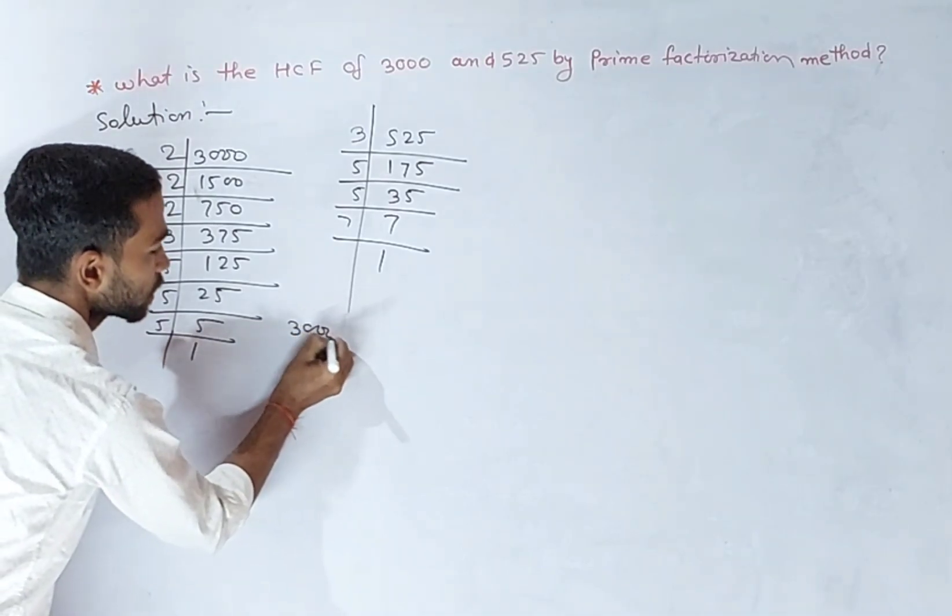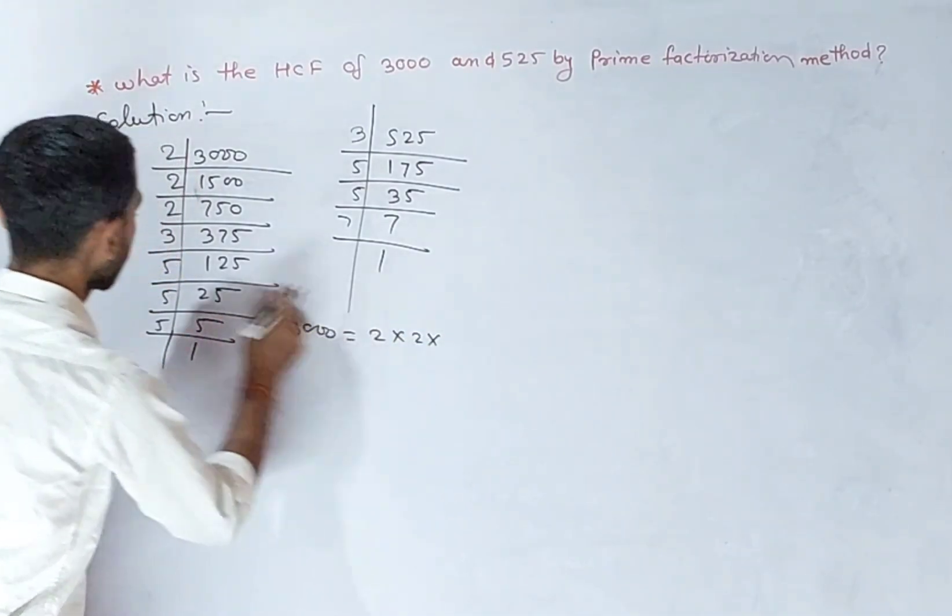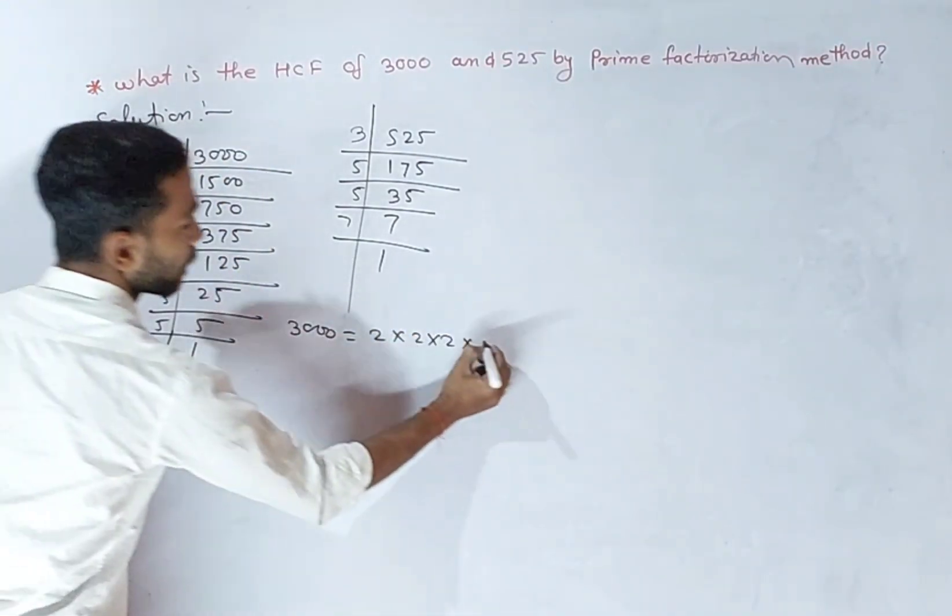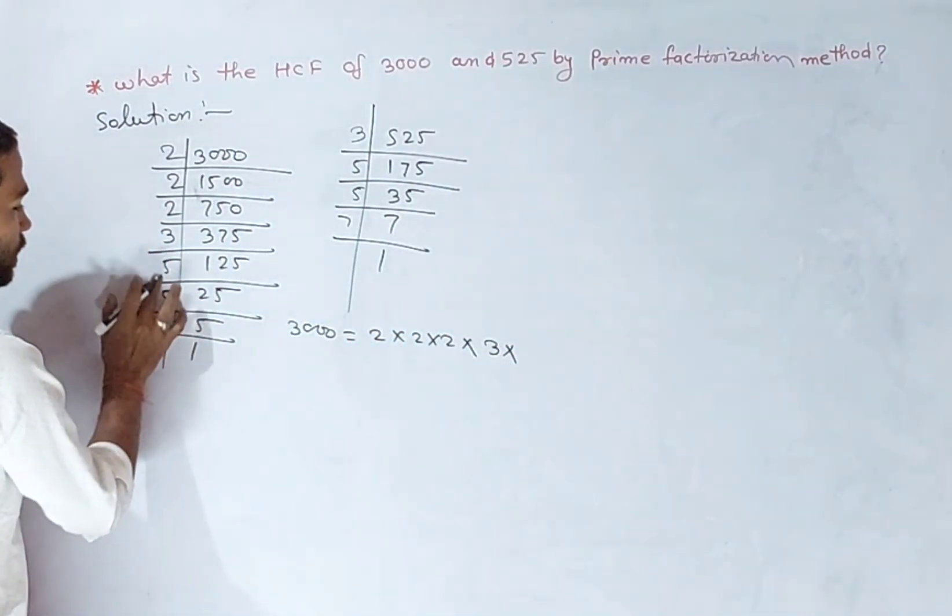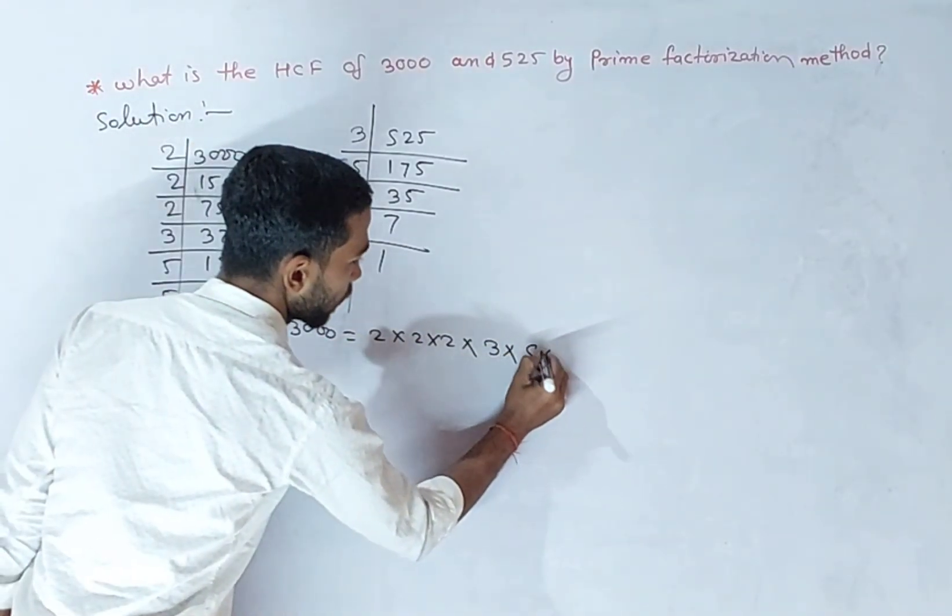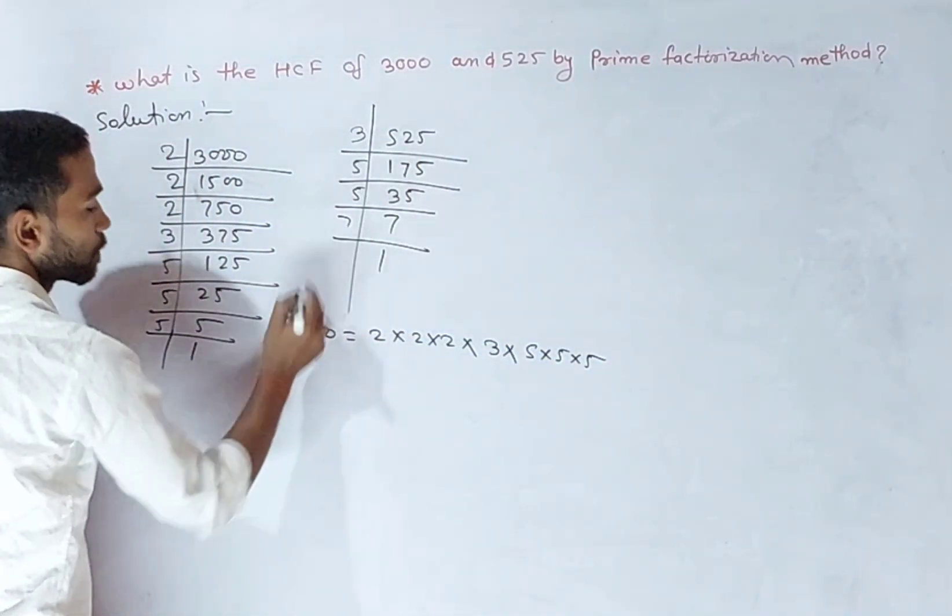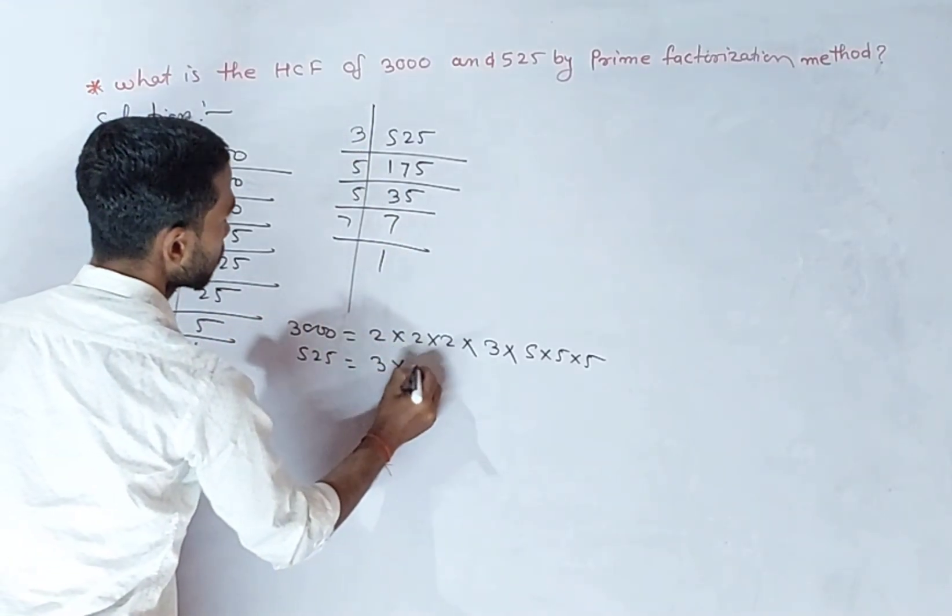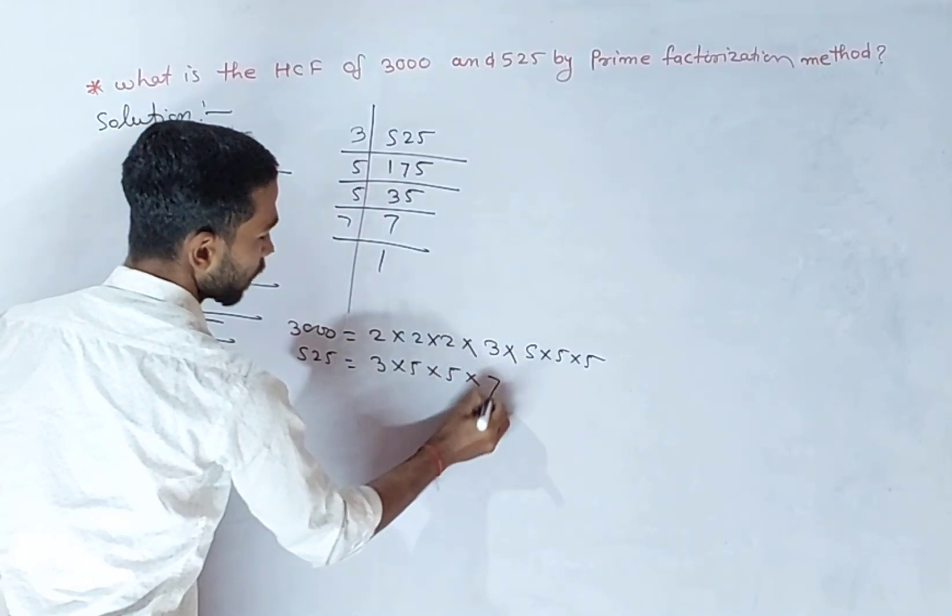3000 equals 2 × 2 × 2 × 3 × 5 × 5 × 5, and 525 equals 3 × 5 × 5 × 7.